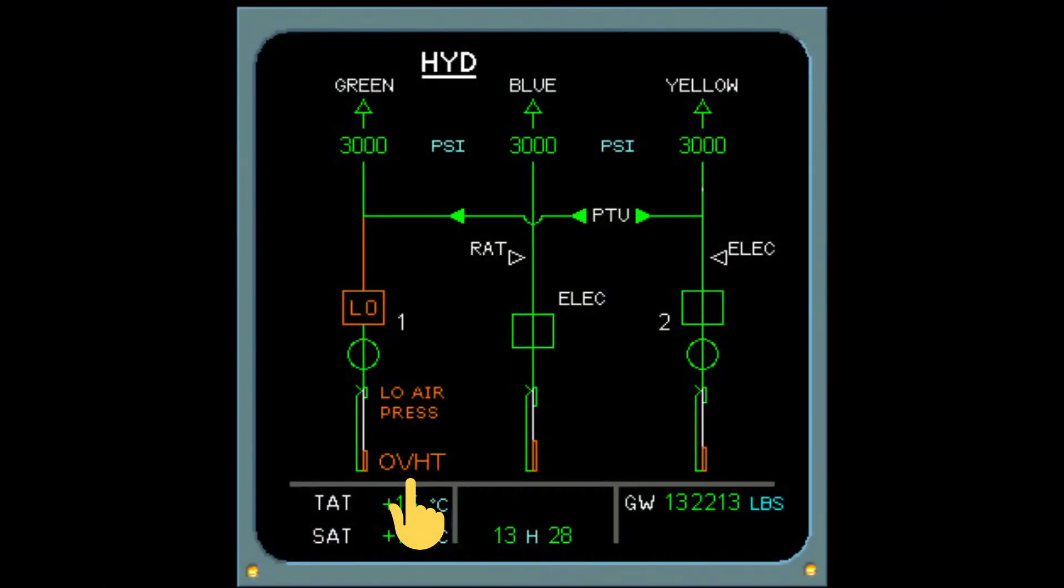Now we see how the page looks when the PTU is working. You can see that the green system has developed an overheat condition and the pump has been switched off. This has caused low pressure on the pump. However now since the PTU conditions are satisfied, the PTU is operating and the yellow system is powering the green system as well at 3000 PSI pressure.